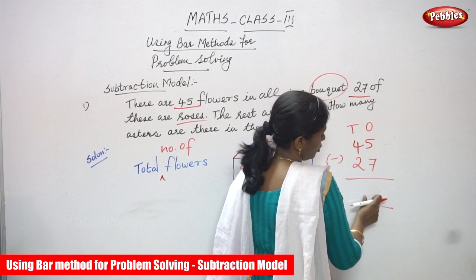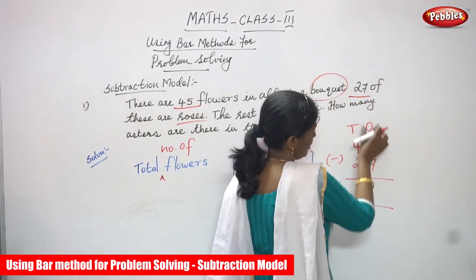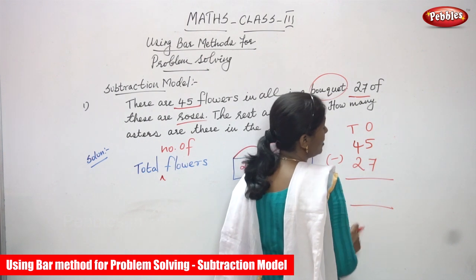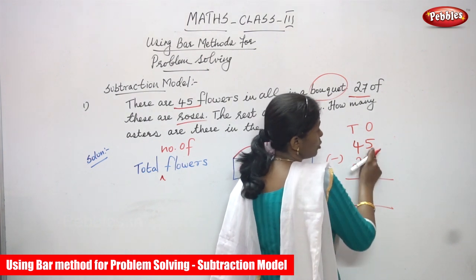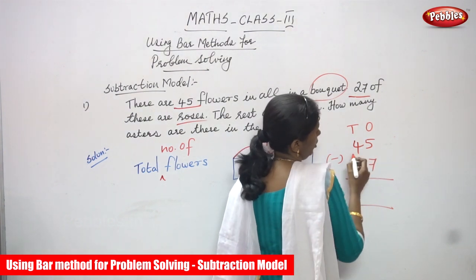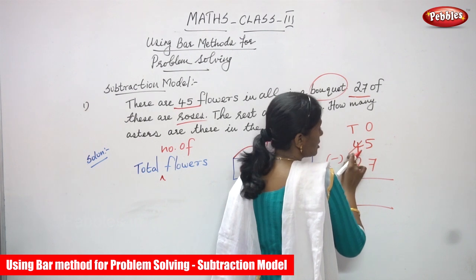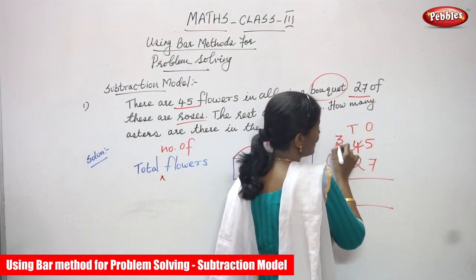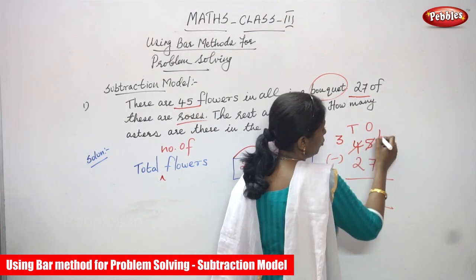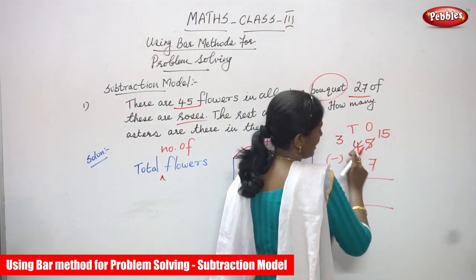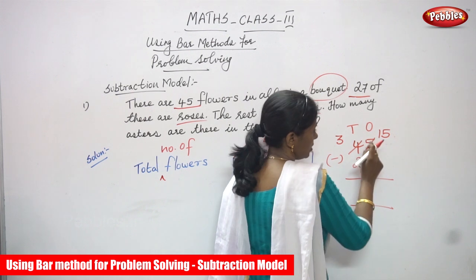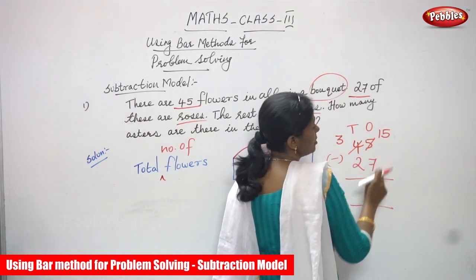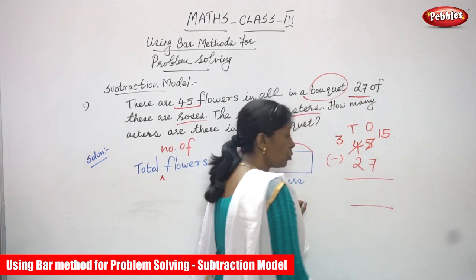I am going to do the ones place value first. The numbers in the ones place are 5 and 7. Since 5 is not enough to subtract 7, I have to borrow from the tens place. So 4 tens become 3 tens, and this 5 ones becomes 15 ones, because 10 plus 5 gives 15. Now it is a greater number, so 15 minus 7.